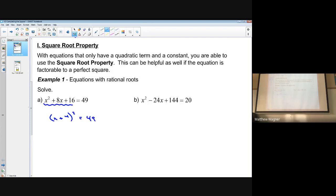At this stage, we can then use square roots to solve. So we wind up with x plus 4 equals plus or minus 7, which means our two answers are negative 11 or 3.